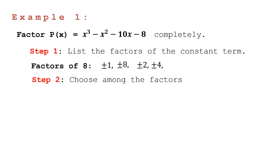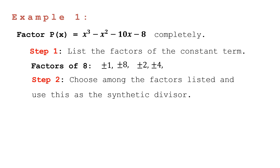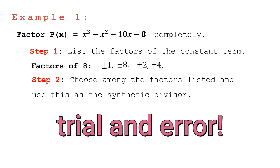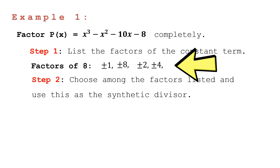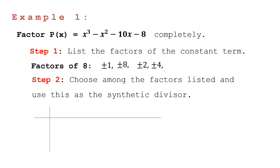Step two: choose among the factors listed and use one as our synthetic divisor — this is a trial-and-error process. Write the numerical coefficients of the polynomial: positive 1, negative 1, negative 10, and negative 8. Make sure they are complete and arranged in decreasing power of x. We choose positive 1 as our first synthetic divisor and proceed with synthetic division.